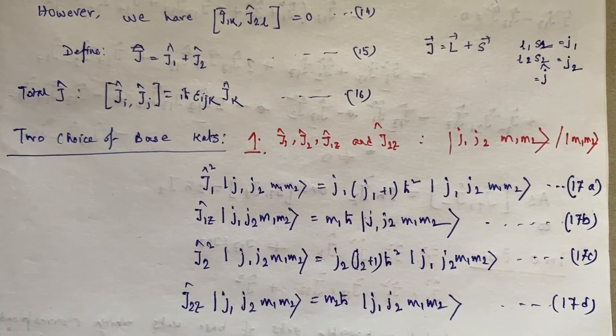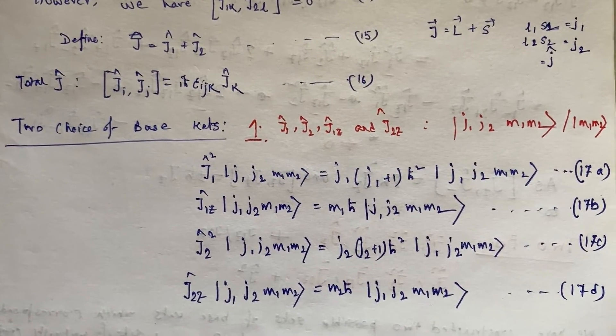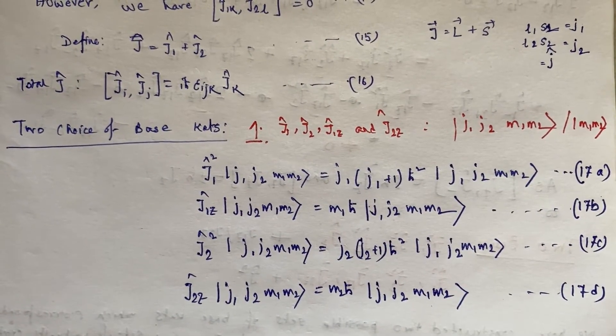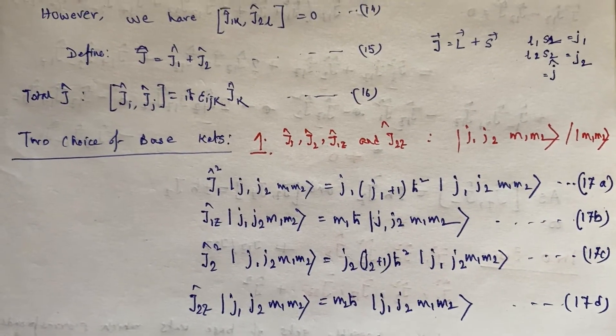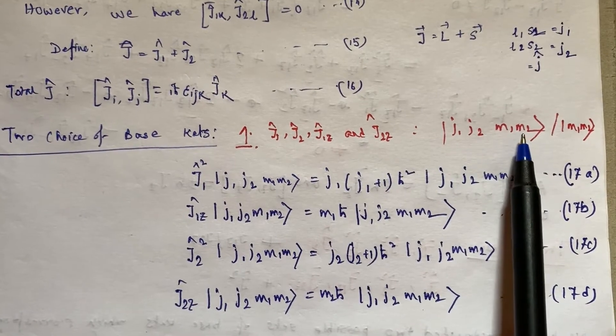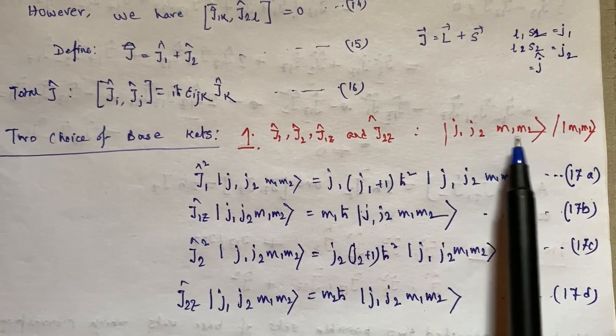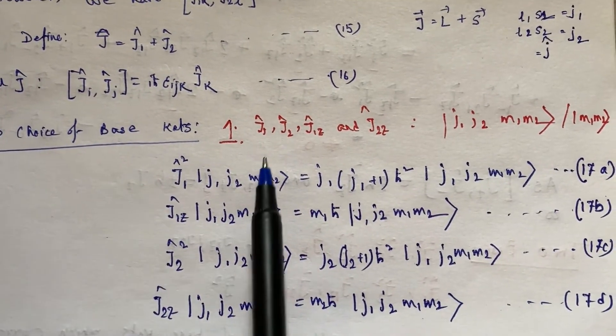Now, in order to develop the theory, we have two options. We have two choices of basis. First basis would be |j₁, j₂, m₁, m₂⟩, which means these are the quantum numbers associated with